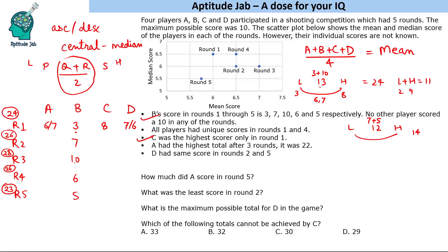For Round 3, the total is 28 and the median score is 6, so the two central values add up to 12. One of the scores is 10 (B's score), which is clearly the highest. So lowest + 10 + 12 = 28, meaning the lowest = 6. If the lowest is 6 and the central two values sum to 12, both central values must be 6. So in Round 3, all four players score 6, 6, 6, and 10.